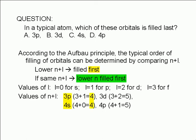Therefore, 3p and 4s will be filled before 3d and 4p. To break the tie between 3p and 4s, we compare the n values. n equals 3 for the 3p and n equals 4 for the 4s, so the 3p will be filled before the 4s. Similarly, 3d is filled before 4p. So the order of filling is 3p first, then 4s, then 3d, and finally 4p. The orbital that is filled last is therefore 4p.